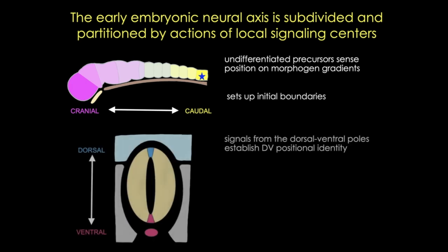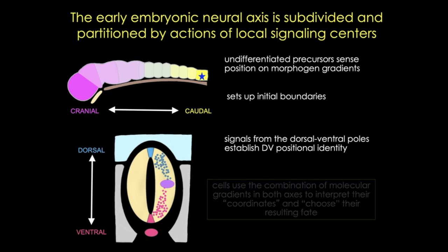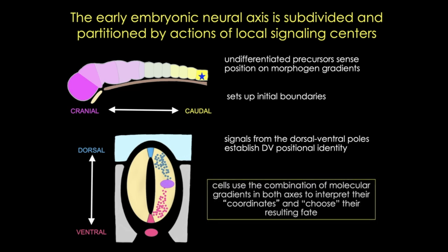The second form is dorsal-ventral patterning. This cartoon shows the neural tube with two signaling centers at the dorsal and ventral poles. Morphogens are released forming two gradients, and a cell will interpret those signals to determine its identity. A cell detecting low amounts of both morphogens will take on the fate of an intermediate cell. Cells must interpret a combination of signals from both cranial-caudal and dorsal-ventral axes to determine their coordinates.